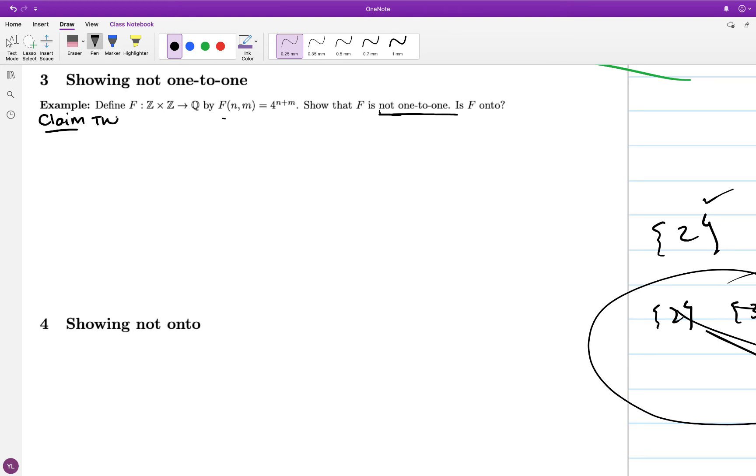All right, let's argue that this function is not 1 to 1. In order to argue that, I have to demonstrate two non-equal elements of the domain that go to the same element of the co-domain by the function.